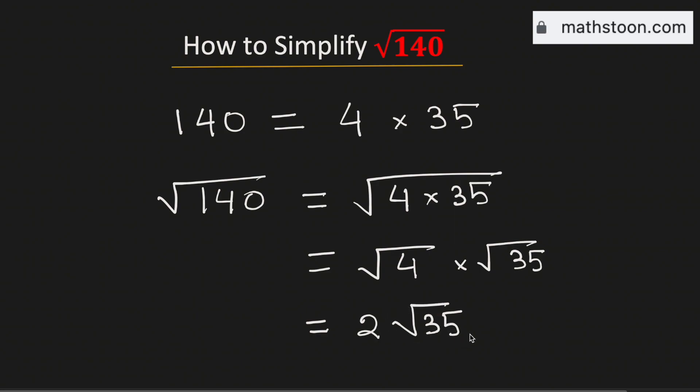Therefore, 2 square root of 35 is the simplified form of the square root of 140.